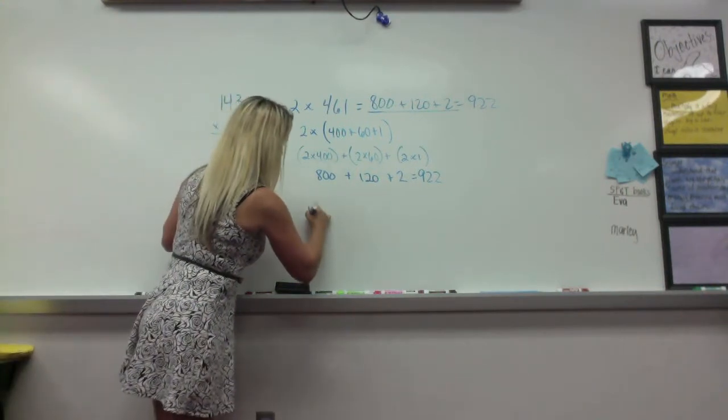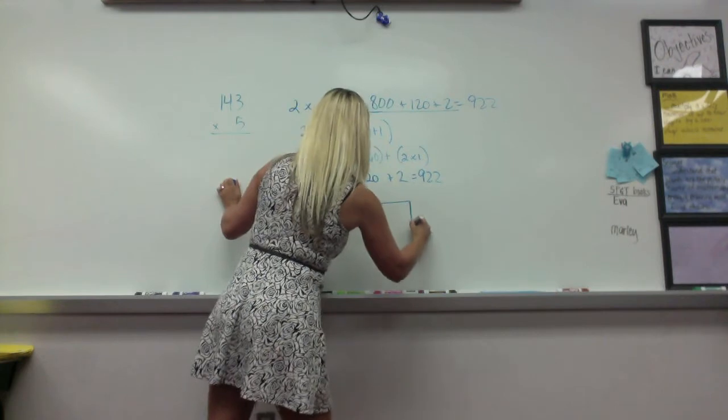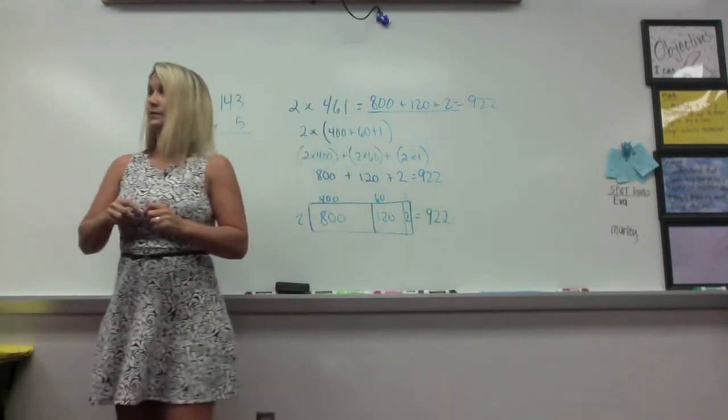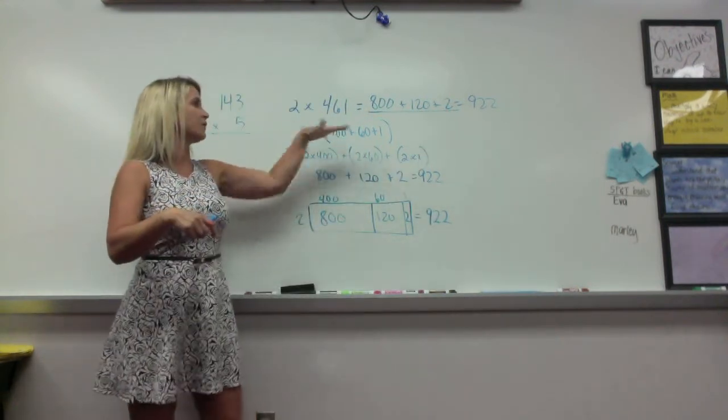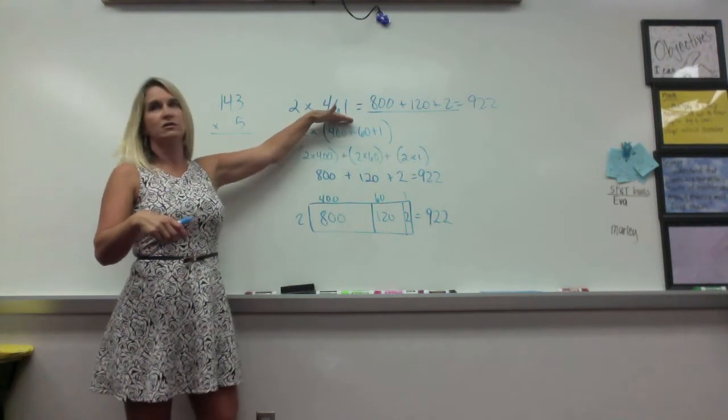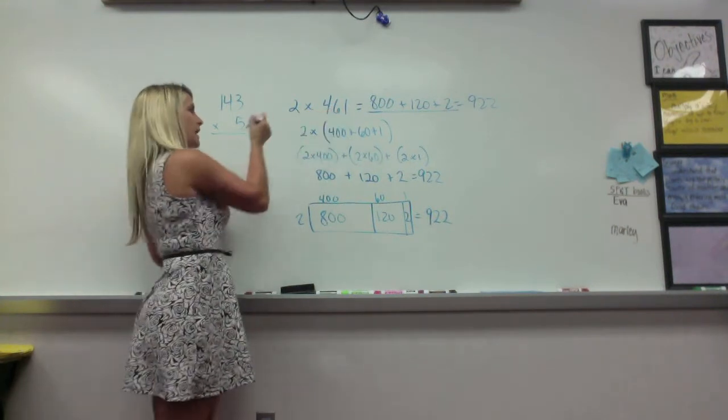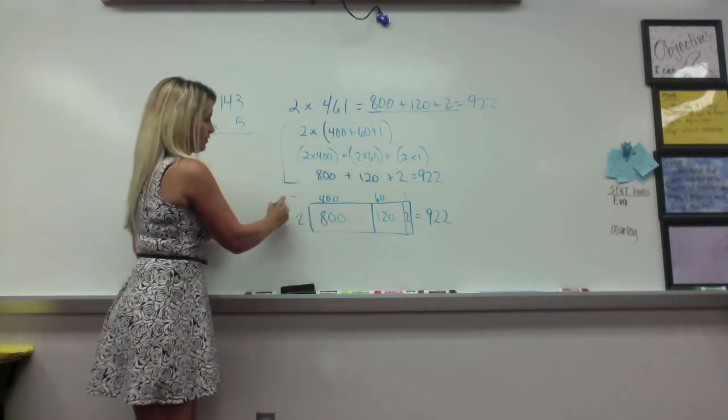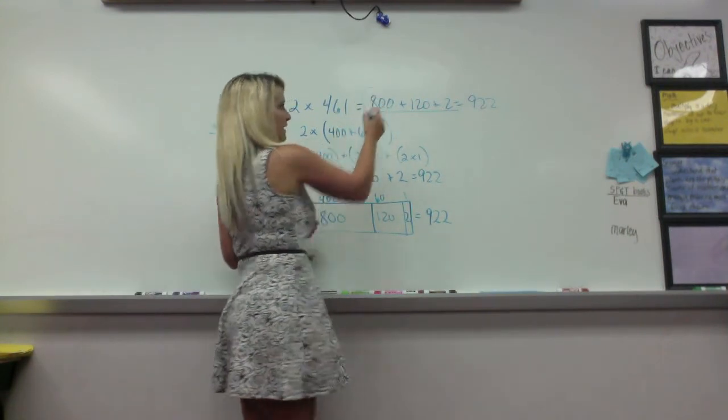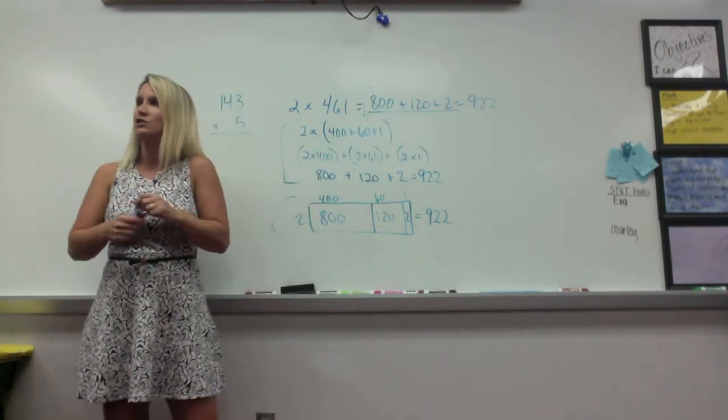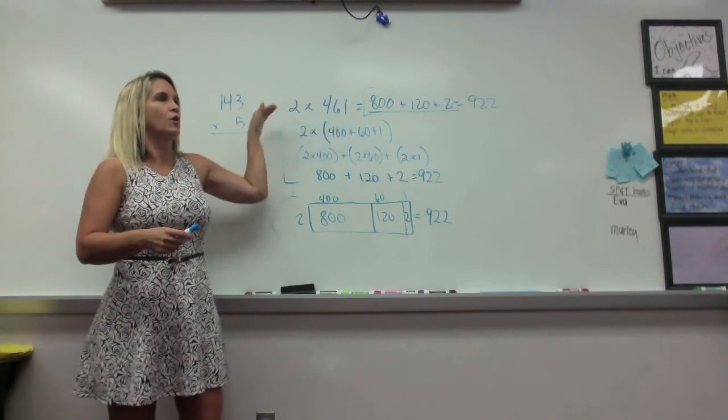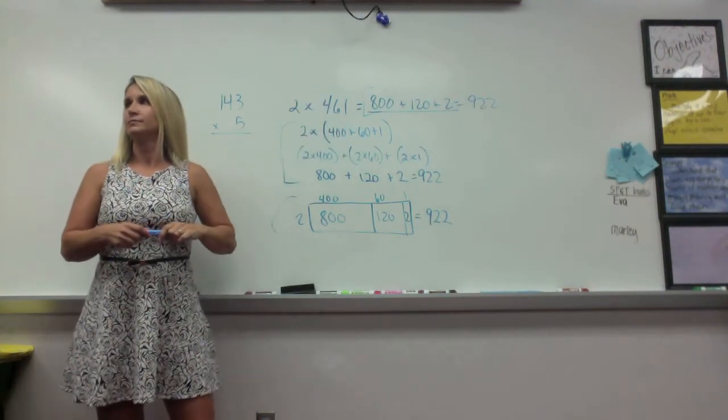These are all ways that you can do this. Whatever way makes sense to you and works for you. I'll put this one back up for those who like this one and you can reference back. Okay. So, we're going to do expanded form like this. Change this to expanded form. You can either do it this way. Or you can do it this way. Or you can just do it straight out like this. There's three different options of how to change this to expanded form and then to multiply it by the two.